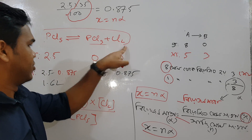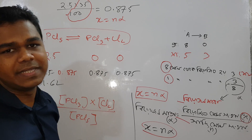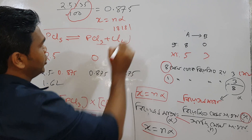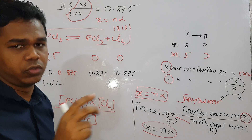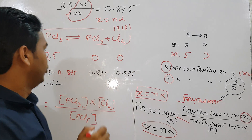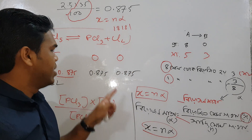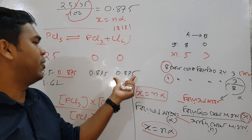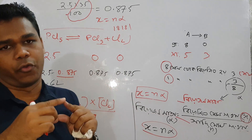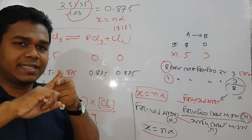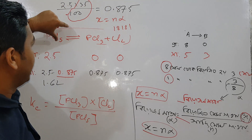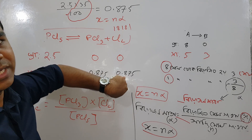If you look at ACMOL PCl5, ACMOL PCl3 is equal to ACMOL PCl3. This value is equal to ACMOL PCl5. ACMOL PCl3 is equal to this floating value, which is 0.875. This value has been confirmed to be equal to n·alpha, which is 0.875.